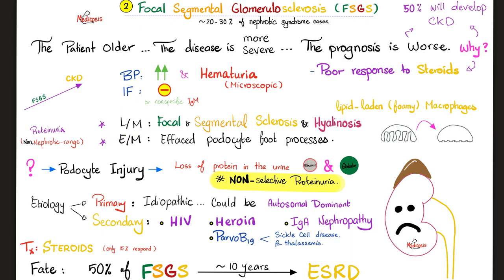By light microscopy, focal segmental glomerulosclerosis shows focal segmental sclerosis and hyalinosis with lipid-laden macrophages — what we call foamy macrophages. It is largely idiopathic, meaning we cannot figure out the exact pathology. The underlying mechanism is podocyte injury, and you end up losing proteins in the urine — both albumin and globulin — making it a non-selective proteinuria.